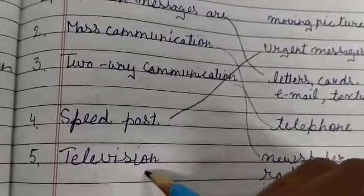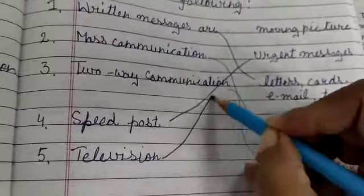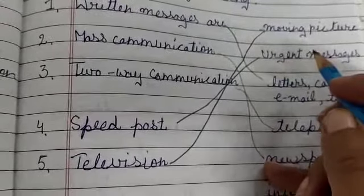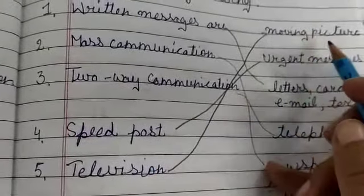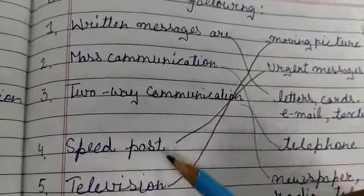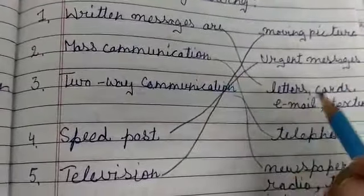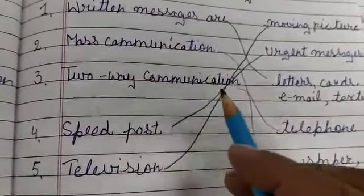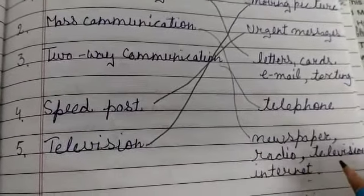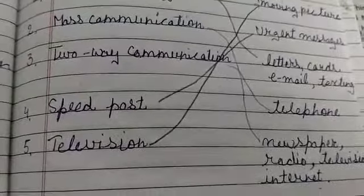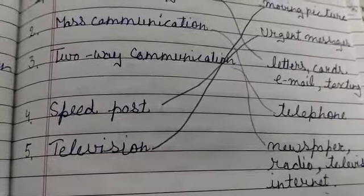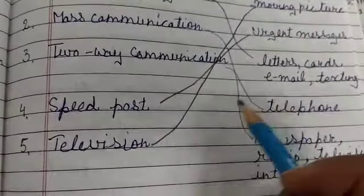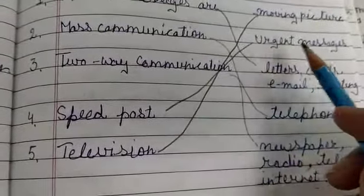Number five: television. Television is moving pictures — television shows moving pictures. We will match the fifth with moving pictures. So here we have done Exercise C. Written messages are letter card, email, and taxi. Mass communication is newspaper, radio, television, and internet. Two-way communication is telephone. Speed post is for urgent messages.